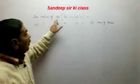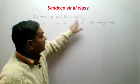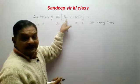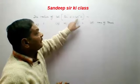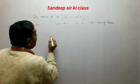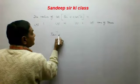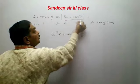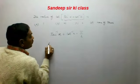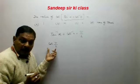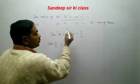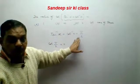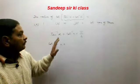The next question asks for the value of cot(tan⁻¹α + cot⁻¹α). Using the inverse trigonometric formula tan⁻¹x + cot⁻¹x = π/2, the expression inside becomes π/2. So the expression becomes cot(π/2), and we know cot 90° = 0. Option C is correct, using the formula tan⁻¹x + cot⁻¹x = π/2.